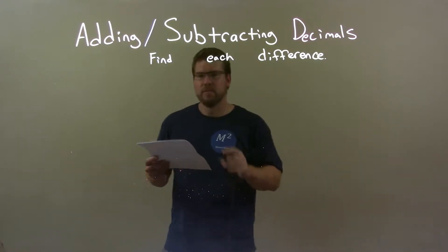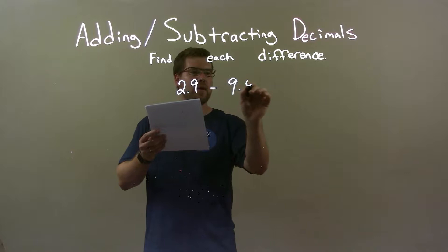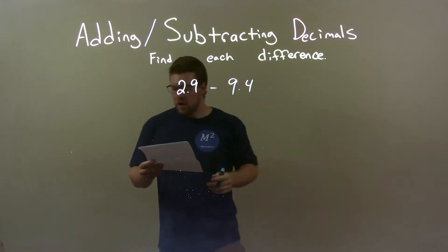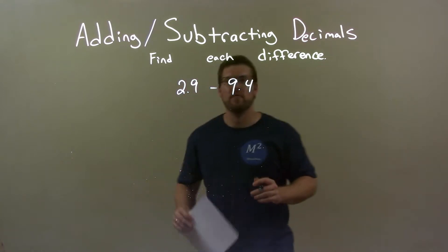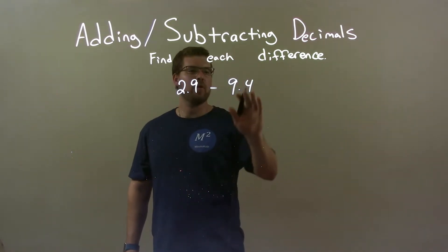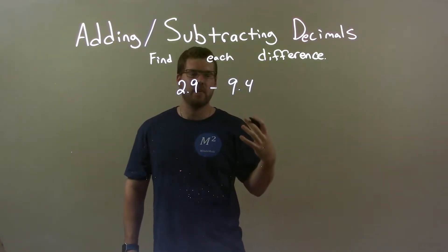So, if I was given these decimals, 2.9 minus 9.4. Okay. So, what do we need to do first? Well, I have 2.9 minus 9.4. I know that 9.4 is larger than 2.9, so our answer is going to be a negative number.